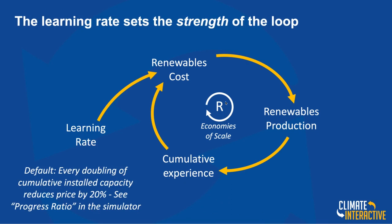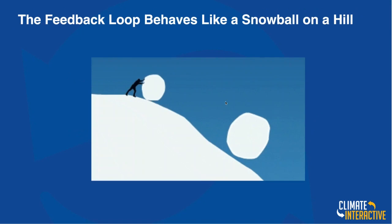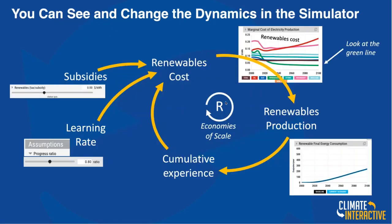It brings the cost down with the strength of the loop governed by what's called the progress ratio — the learning rate. The way it's captured in En-ROADS and in energy economics generally is that every doubling of cumulative installed capacity brings the price down some percentage. In En-ROADS, we chose the assumption from Jungner et al. of a progress ratio of 0.8, meaning a 20% drop with every doubling of cumulative capacity. That's the learning rate. A good analogy: it's like a snowball rolling down the hill — the bigger it is, the faster it rolls, growing as a reinforcing process.